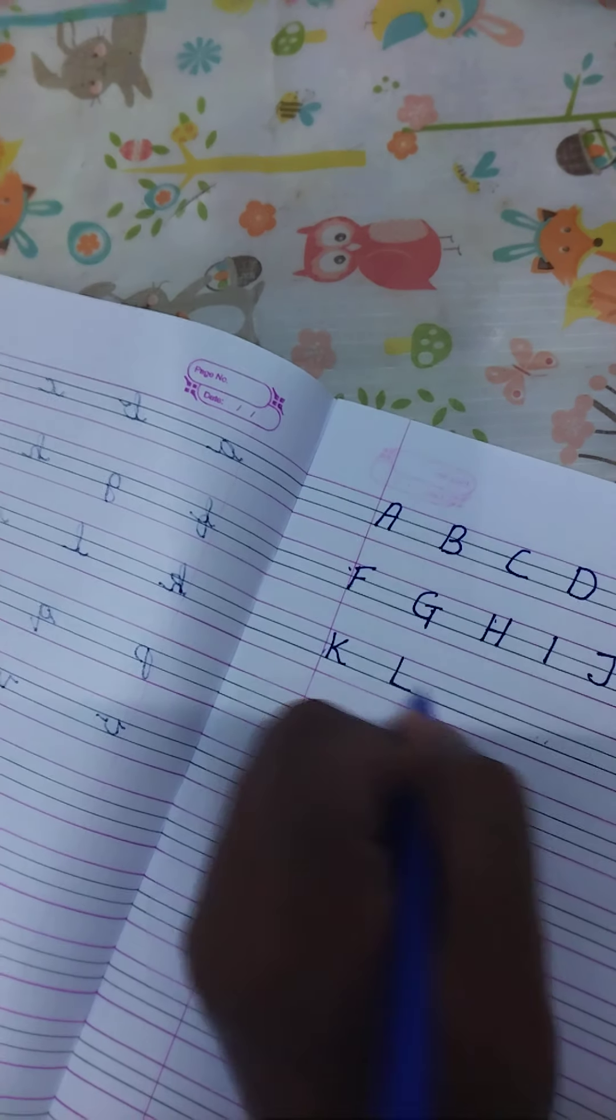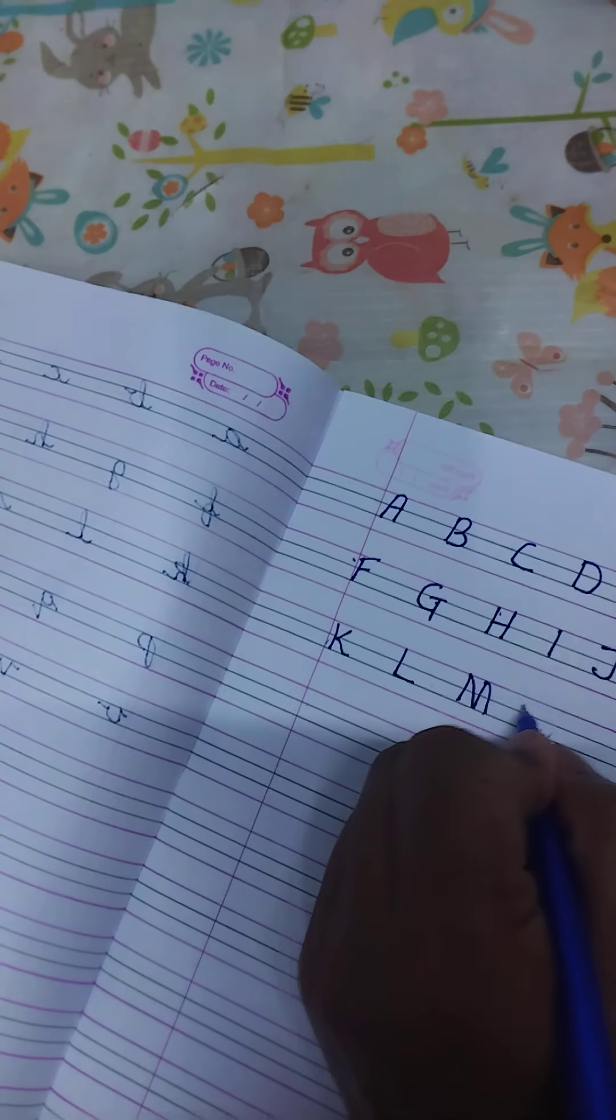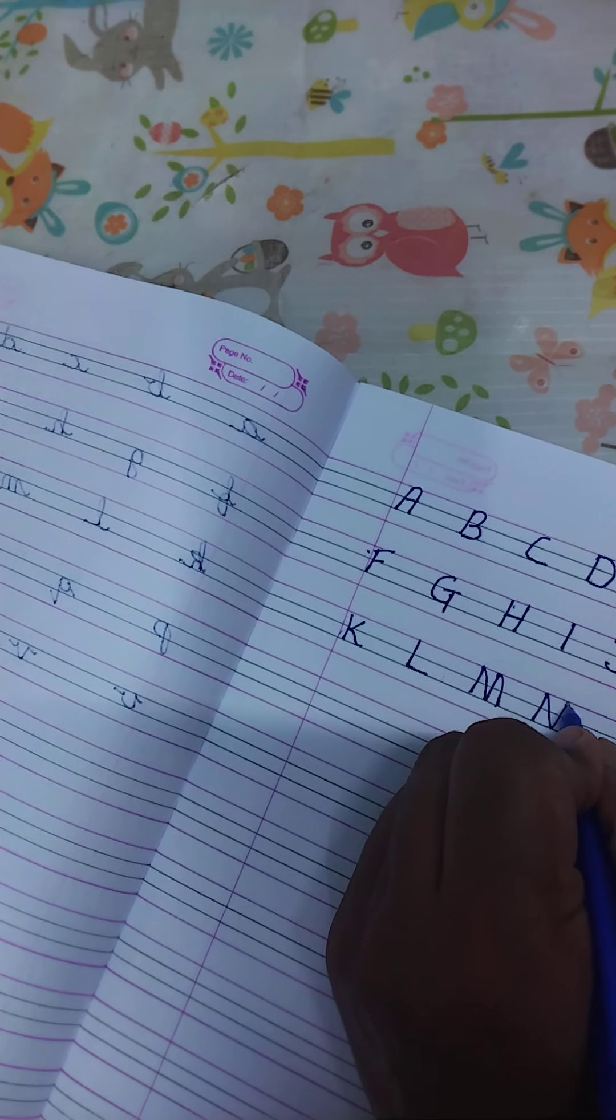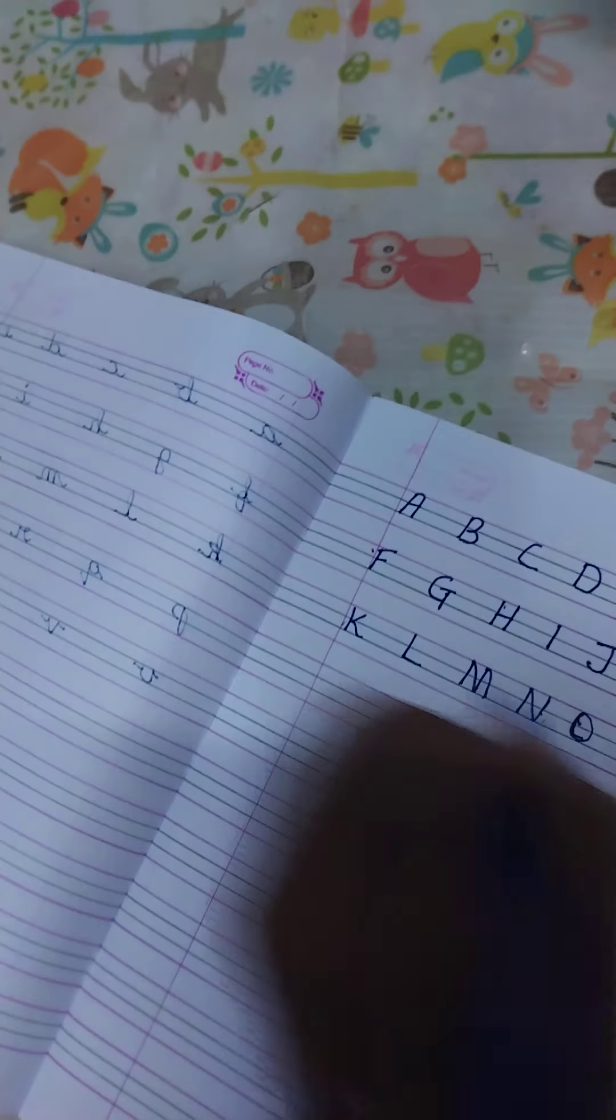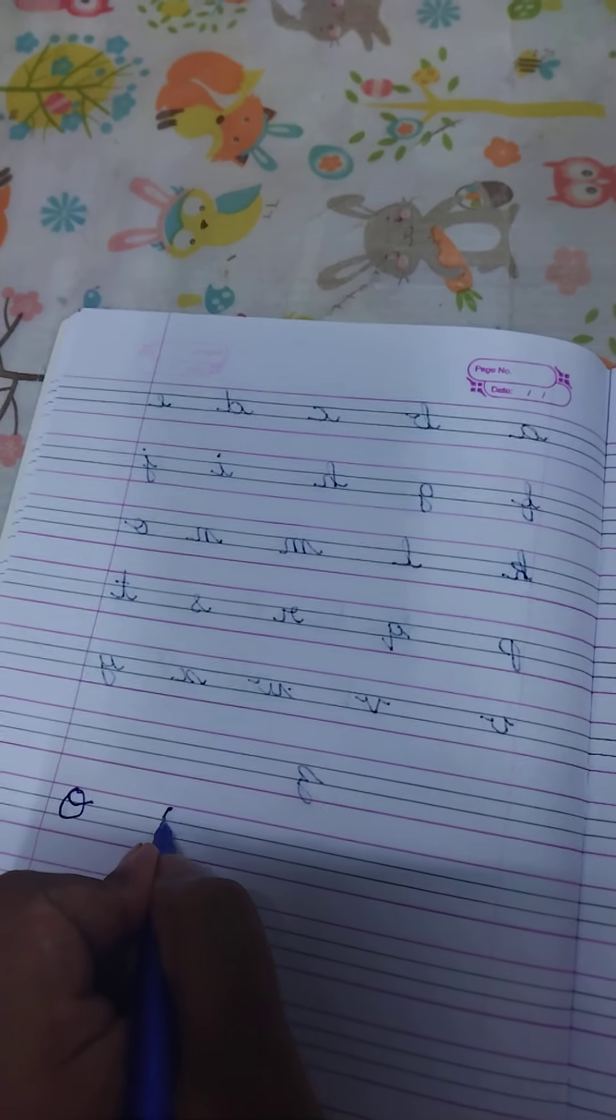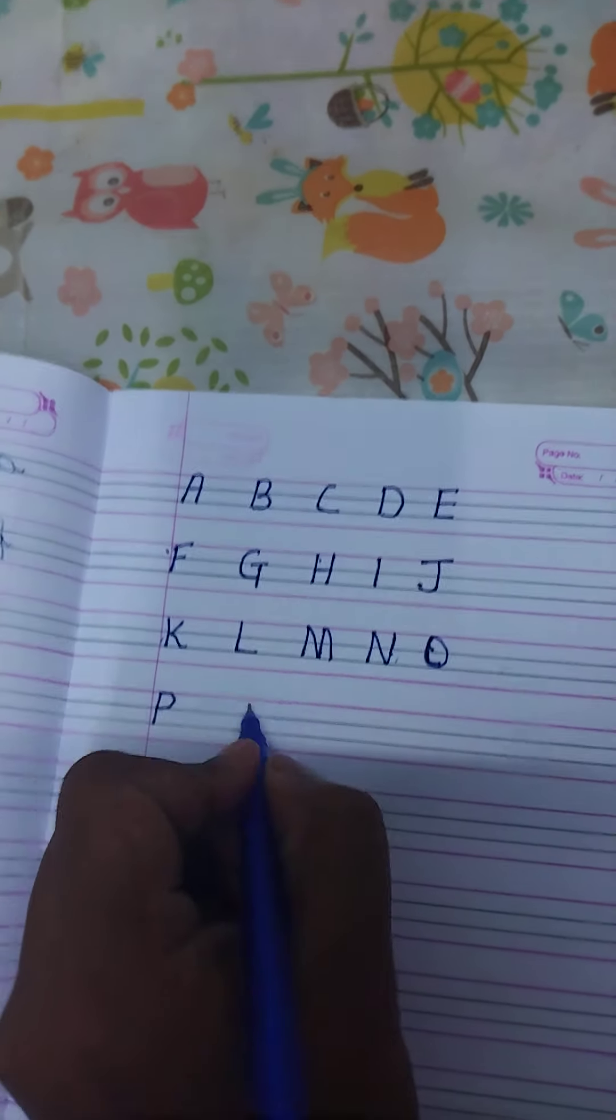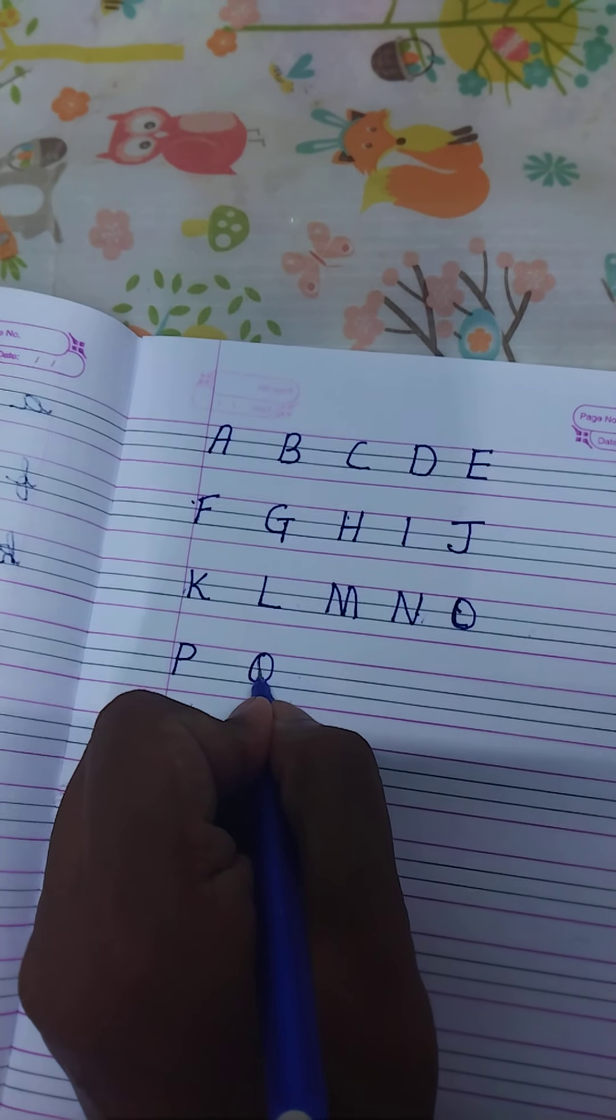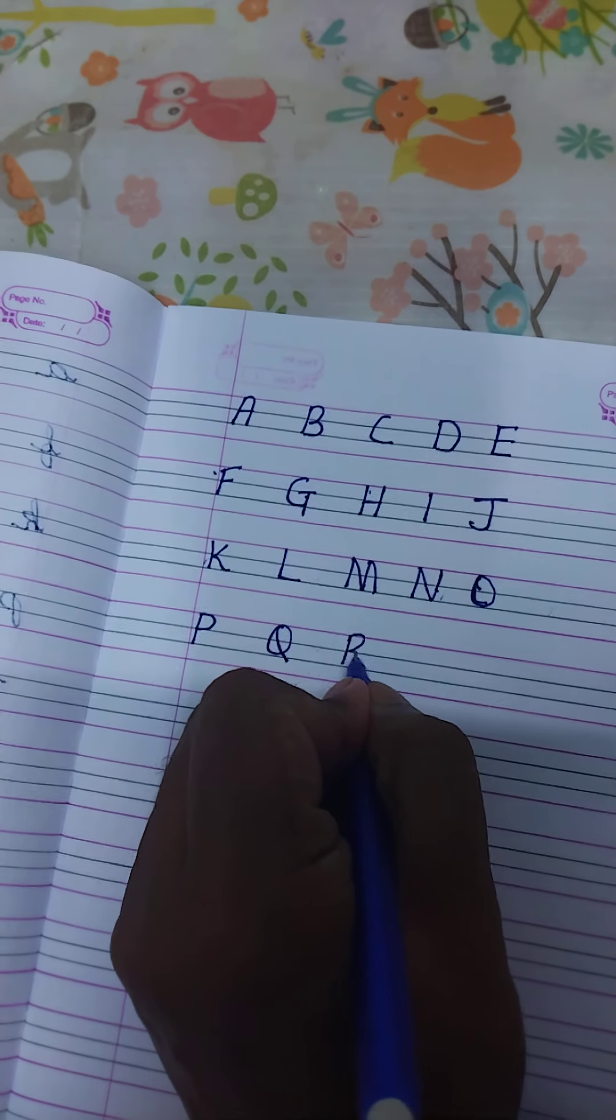M, N, O. O should be like this, not cursive. In cursive we have written like this, but in a simple capital letter we have to written like this. B, Q, T, R, S.